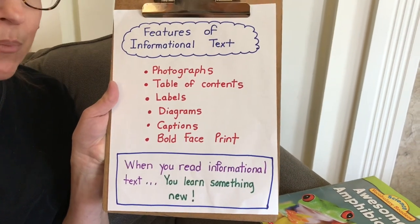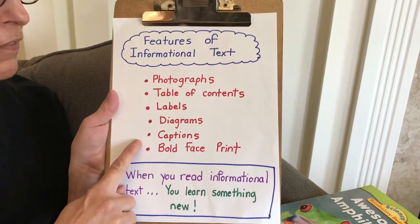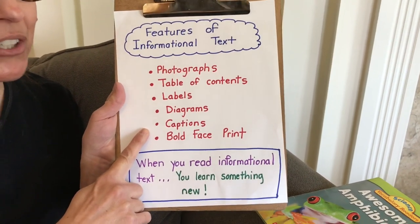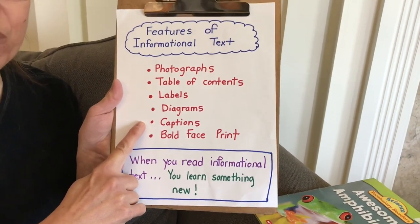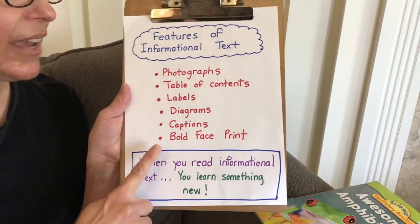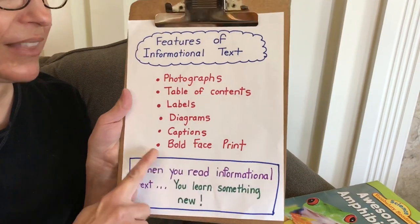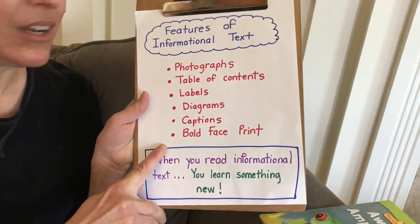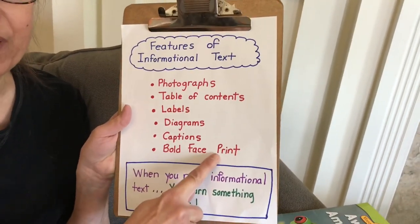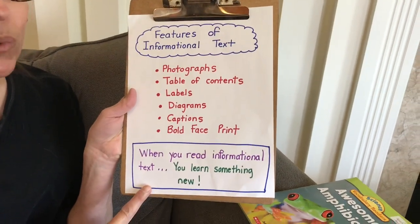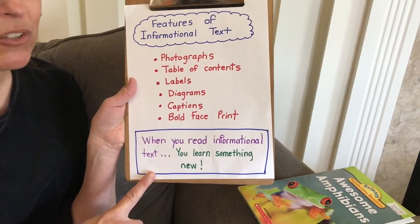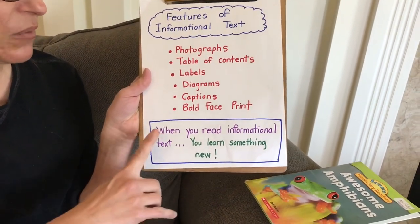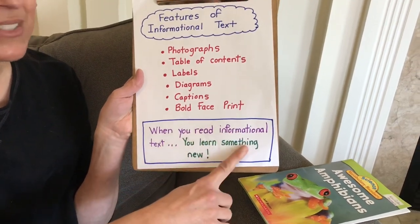Maybe we'll see some diagrams in today's book. Another feature is captions. Captions are a sentence that tells more about the picture and it's right on the picture. And another feature is bold face print — that's when the word is in dark print and it's the most important word on the page. And I bet by now you can tell me what's the most important thing that happens to your brain when you read informational text. When you read informational text you learn something new.